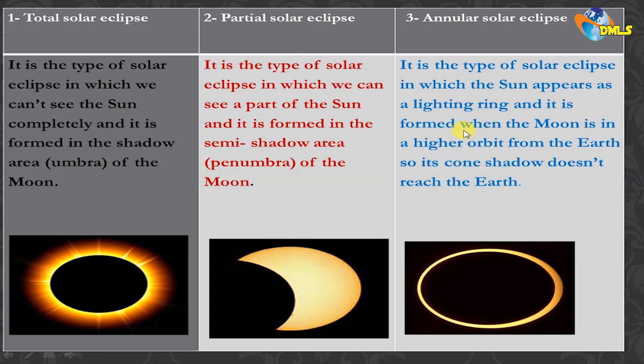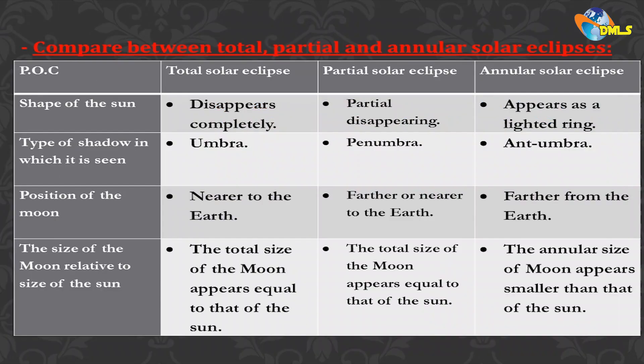So you have three types of solar eclipse: total, partial, and annular. The total solar eclipse happens when you are in the umbra. The partial happens when you are in the penumbra. The annular solar eclipse forms when the moon is in the higher orbit, far away from the Earth.